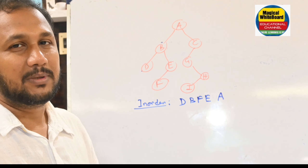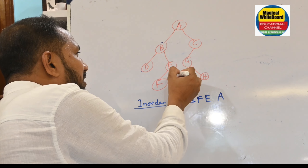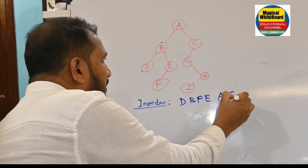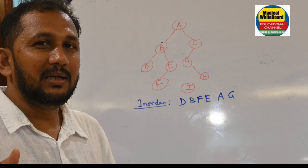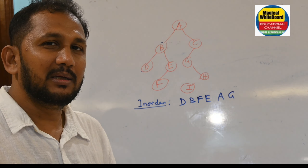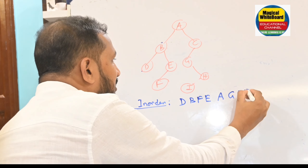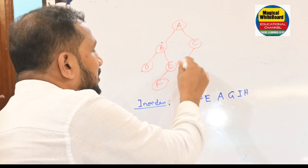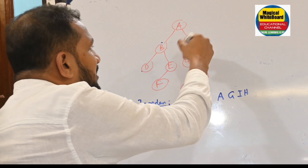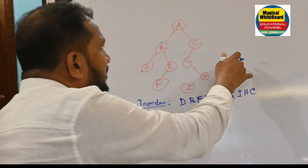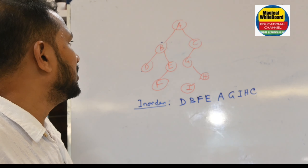After the left subtree is complete, visit the root node A. Then go to the right subtree. Among the right subtree, there is no left node, so we go to the root and right. In the right subtree, find the left node first — left node is I, root is H, and there is no right node. Then visit root C, and there is no right subtree, so no further nodes to visit.